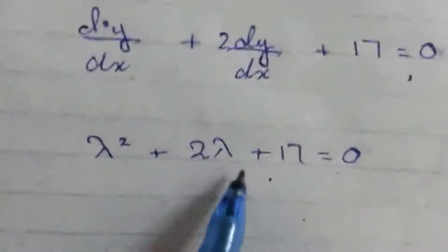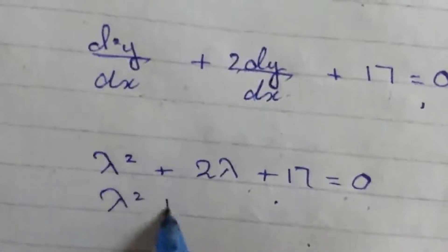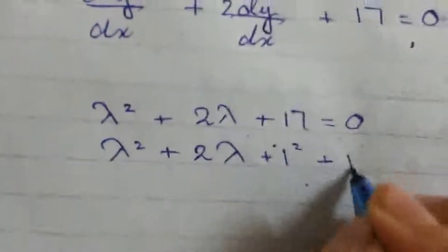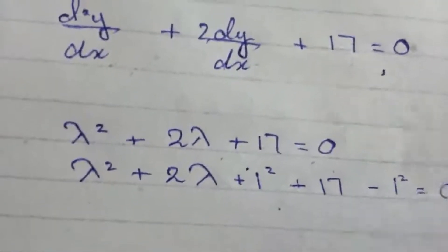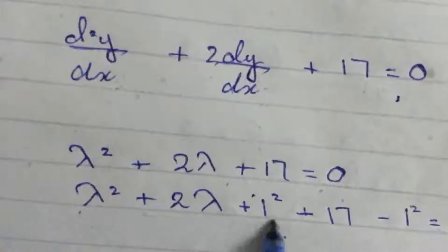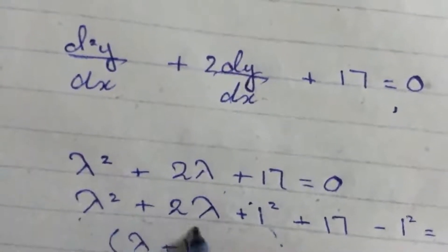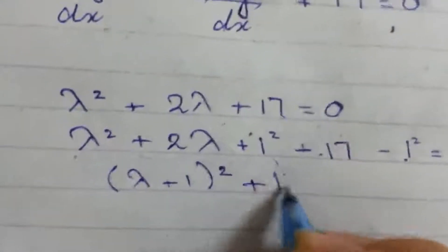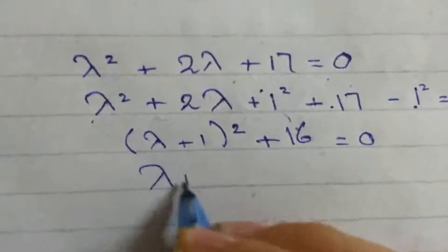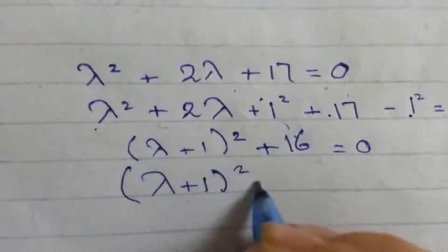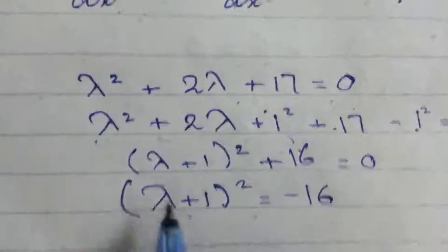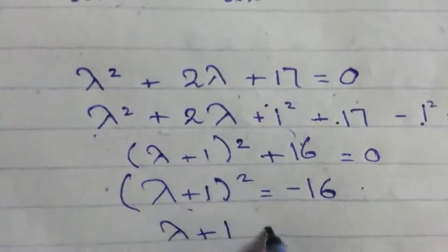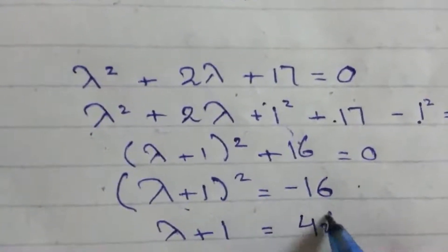Now to find its root we will add plus 1² plus 17 minus 1² equals 0. This whole enclose in a formula: (λ plus 1)² and this will become plus 16 equals 0. λ plus 1 squared, 16 on that side will become minus 16, and when we take root, under root on both of them, it will become λ plus 1 equals ±4i.